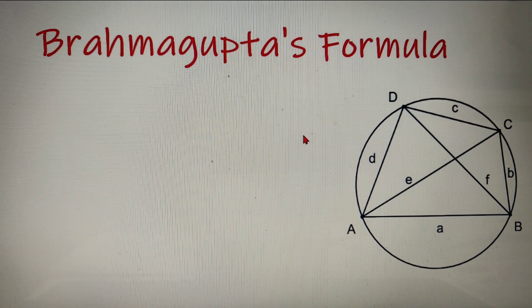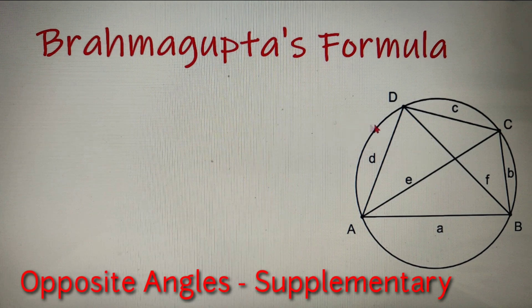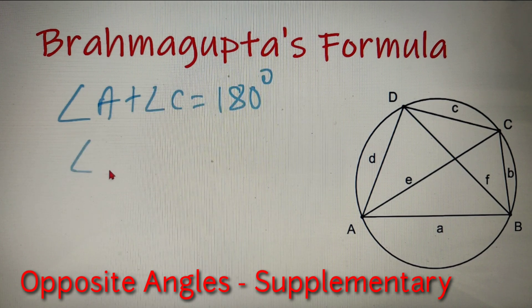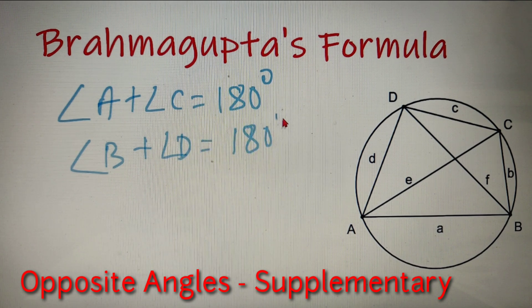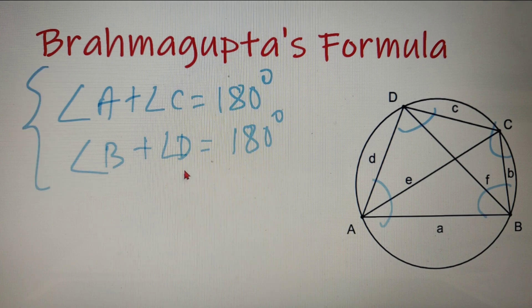Now there are many properties of a cyclic quadrilateral, but the most important one is that the opposite angles are supplementary. So angle A plus angle C is equal to 180 degrees, and angle B plus angle D is also equal to 180 degrees. This is because angle A is opposite to angle C and angle B is opposite to angle D, and since it is a cyclic quadrilateral, these two conditions must follow.